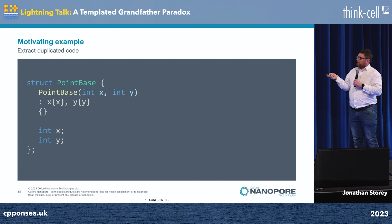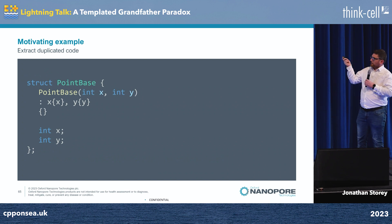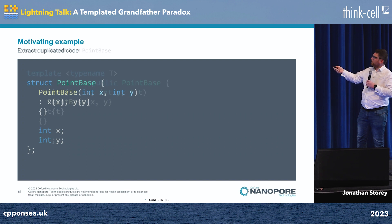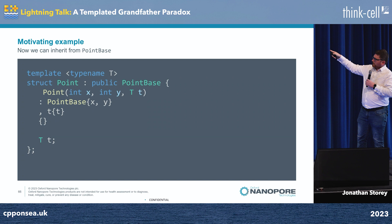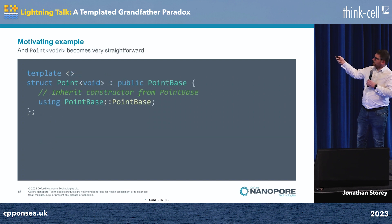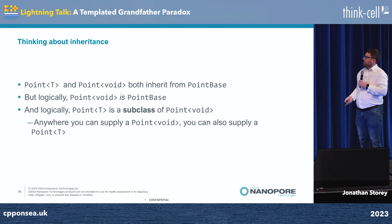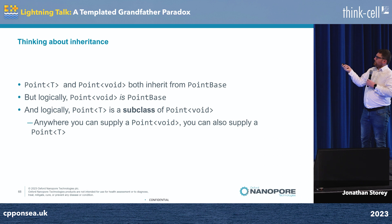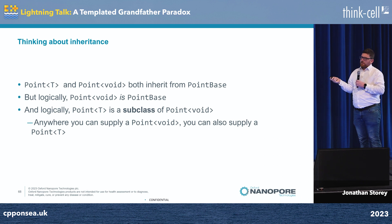So we extract — standard refactoring — extract the common code. We've got point base, which looks very much like the point class we had before. We've got a point that has a T in it, and we've got a specialization with no T in it, which is just the same as point base. Logically, anywhere you use a point of void, you can also use a point of T.